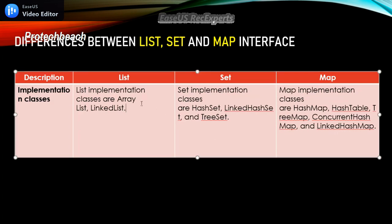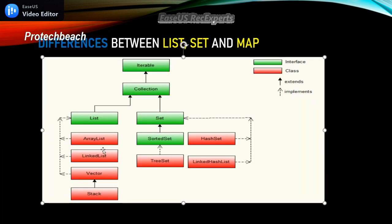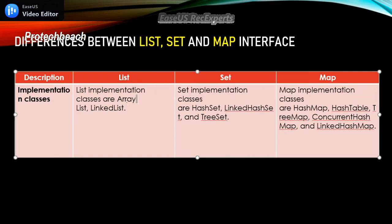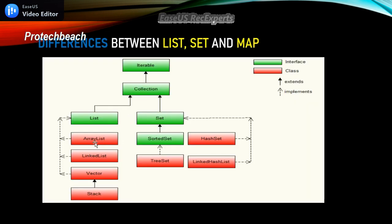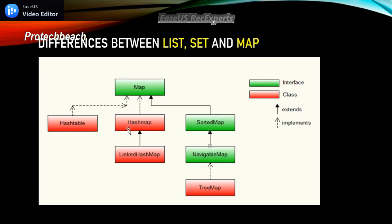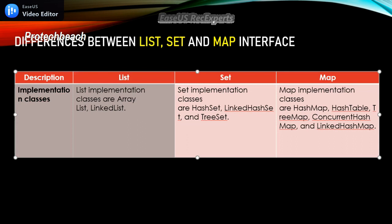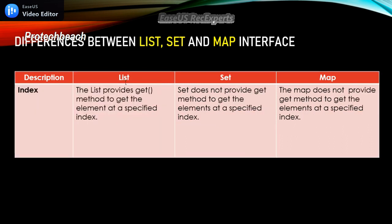The next difference is implementation classes — we already saw this in the initial diagram. ArrayList, LinkedList, and Vector implement the List interface. For Set, the implementation classes are HashSet and LinkedHashSet. For Map, the implementation classes are HashMap and HashTable.